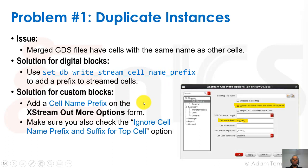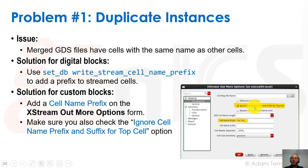For custom blocks, we can do this in the stream-out options in Virtuoso. When we open File > Export Stream, there's an Options button that opens more options. Under cell mapping, you can see options for cell name prefix or cell name suffix to add a prefix or suffix to each block. But make sure you also click the option that says 'ignore cell name prefix and suffix for top cell', or else the top cell name changes and won't be recognized by the tools.